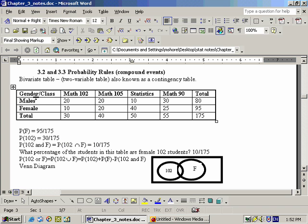So this first example here, or a lot of examples we're going to do here, have tables. This table has two variables going on with it, the person's gender, male or female, and the math class that they're in, math 102, math 105, statistics, or math 90.